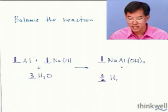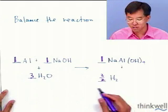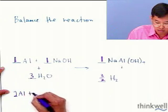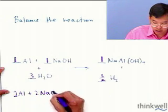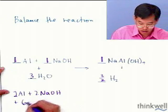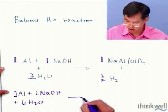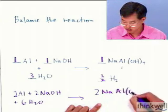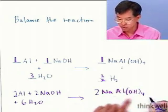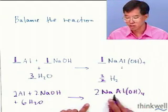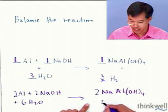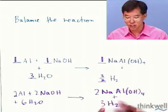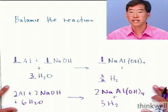And then finally, you'll recall that I said, let's multiply by a factor in order to clear all the fractions. And so if we do that, we have two aluminums plus two sodium hydroxides plus six waters going to form two formula units of sodium tetrahydroxy aluminate and three moles of hydrogen. So this is a balanced reaction now with integral coefficients.